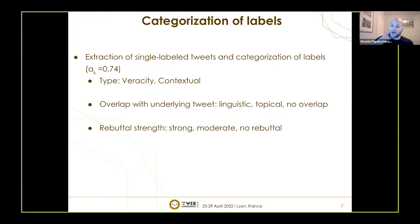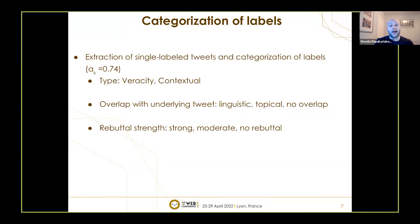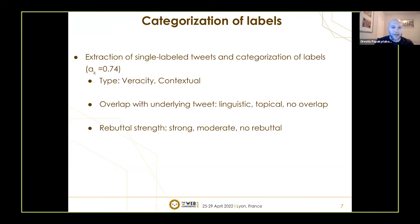To understand whether specific features of labels influenced how users interacted with tweets, we categorized labels into types: veracity labels that explicitly correct the information, and contextual labels that provide more information about an issue. We also created a variable measuring the overlap of the label with the underlying tweet — whether it had the same topical or linguistic content — and a variable quantifying the rebuttal strength of the labels.